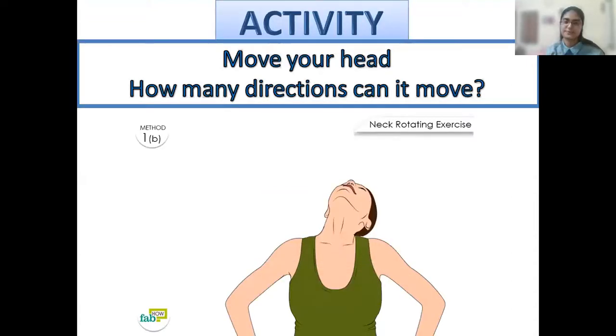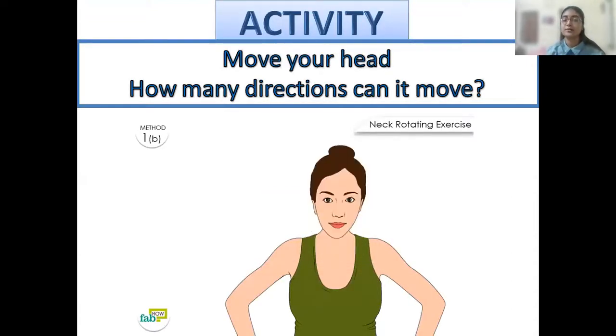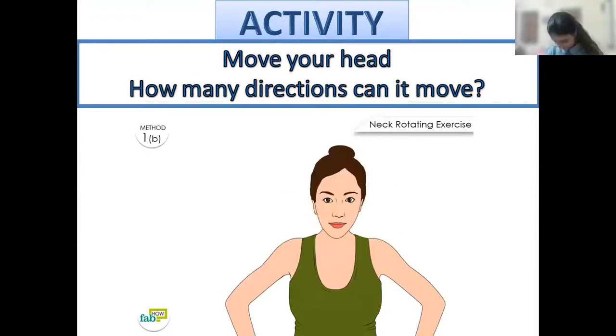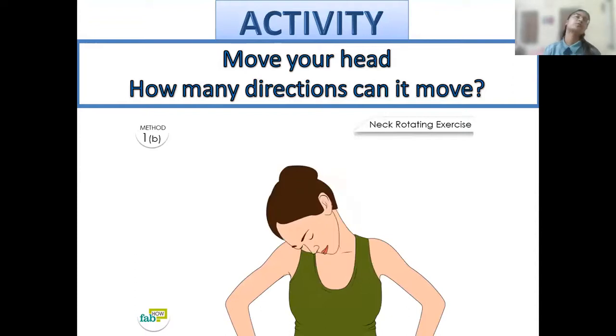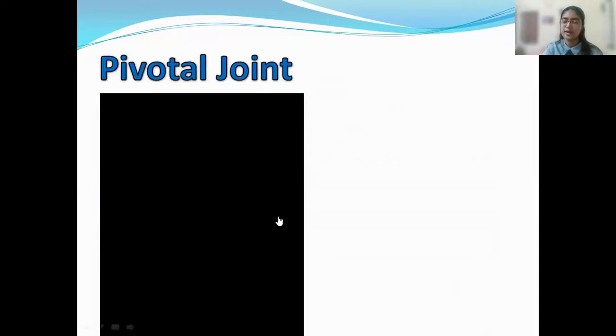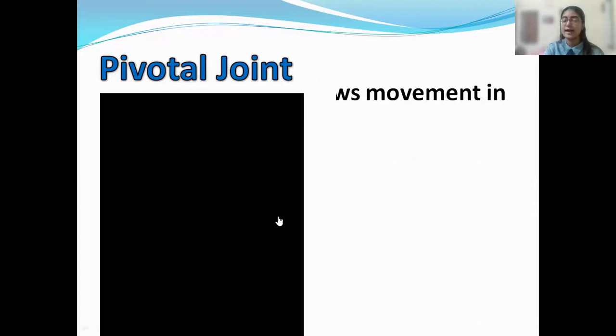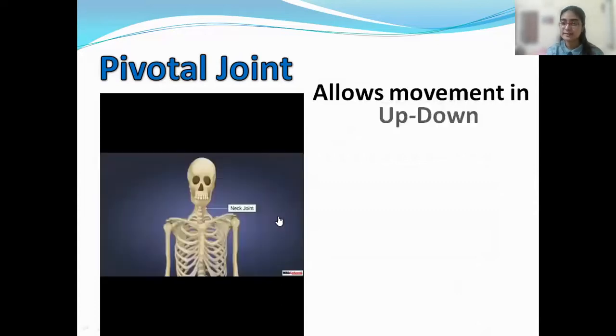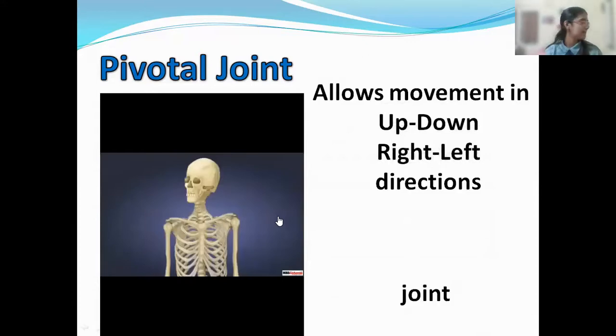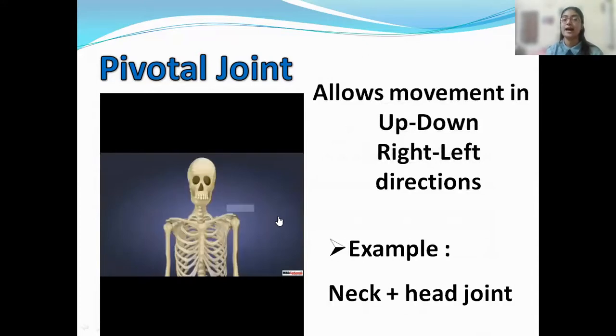Now, let us try another activity. See? How this madam is moving her head? Let us try doing that. Very good. Now, let us see. What is this type of joint called? It is known as pivotal joint. And it allows movement in up, down, right and left directions.